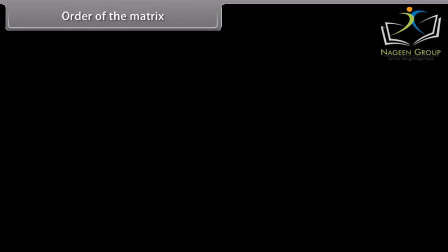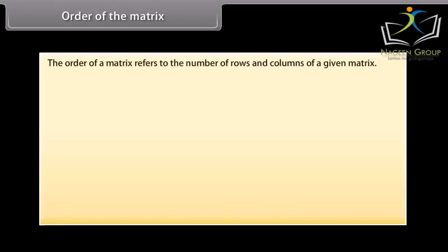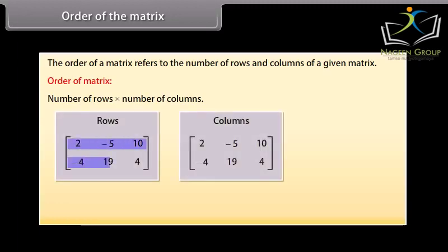Order of the matrix. The order of a matrix refers to the number of rows and columns of a given matrix. By convention, the order of a matrix is given by number of rows by number of columns. Here we can see two pictures of the same matrix with the rows and columns highlighted. The order of this matrix is 2 by 3, that is, 2 rows by 3 columns.